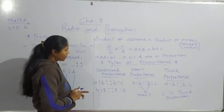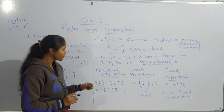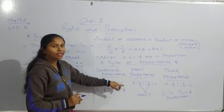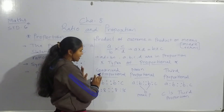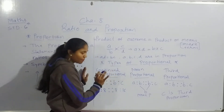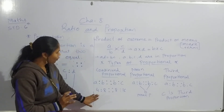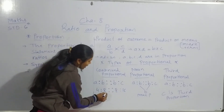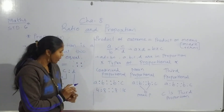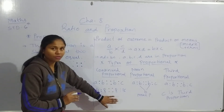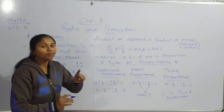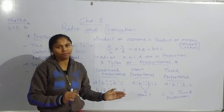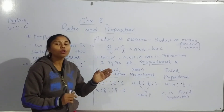Now look at here. A is to b and b is to c — this is called continual proportion. For example, 4 is to 8 and 8 is to 16. Here the middle terms — 8 and 8 — are equal. When the middle terms are the same in this way, we call it continual proportion.